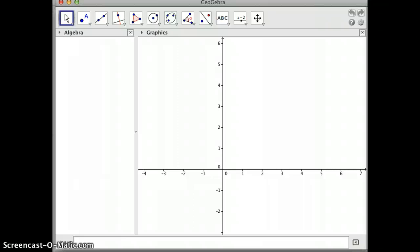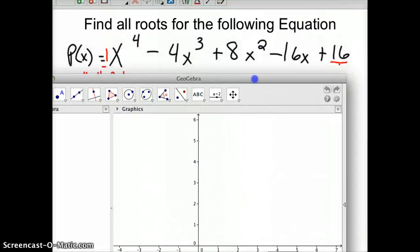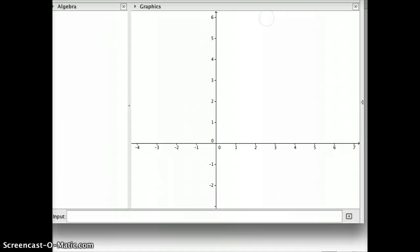So what you do is plug that in. I'm going to pull it so I can see it here. It's x to the 4th minus 4x cubed, so I'll just put it in the input: p of x equals x to the 4th, and use a carat, use a carat for that.